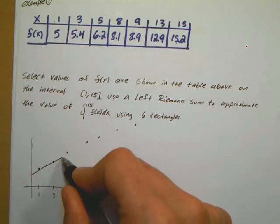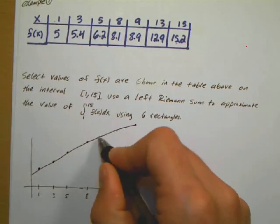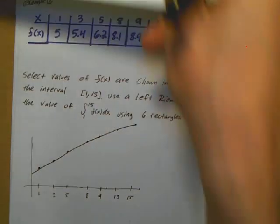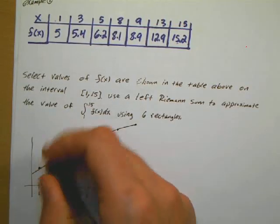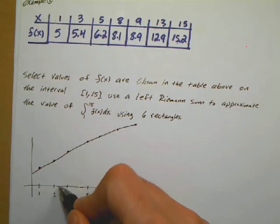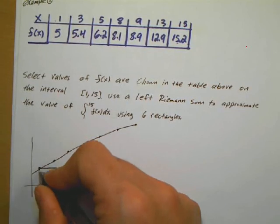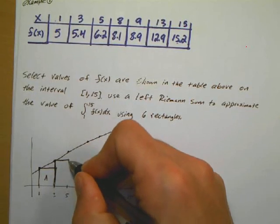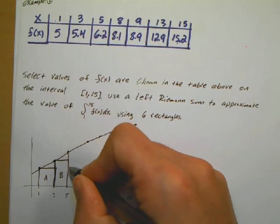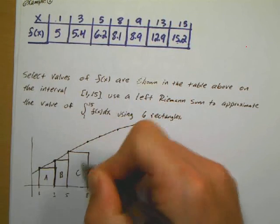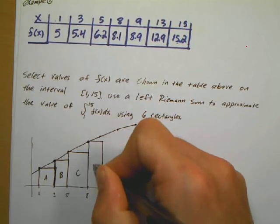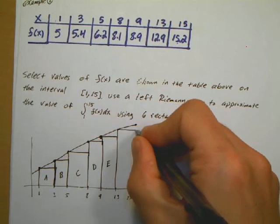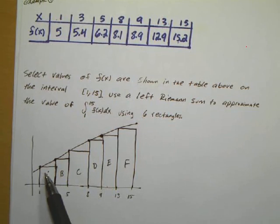The function looks something like this — I'll connect these points. Since it's a left Riemann's Sum, each rectangle has to use a left endpoint, and I want to have 6 rectangles. Rectangle A goes from 1 to 3 using the left endpoint. Rectangle B uses the endpoint at 3 and goes across to 5. Then rectangles C, D, E, and F follow, giving me my 6 rectangles.